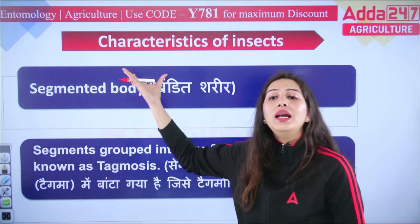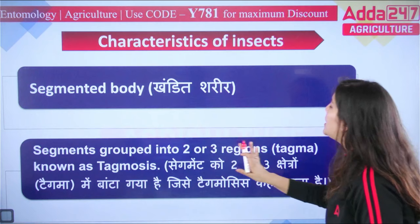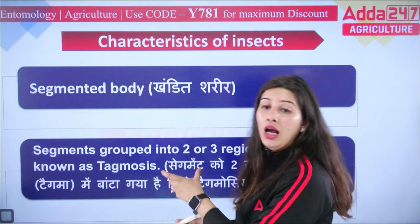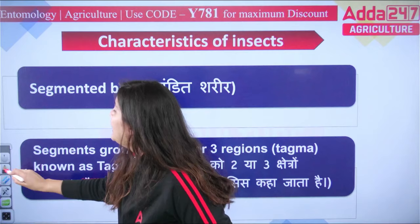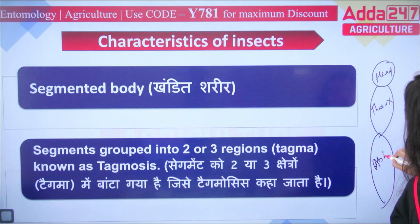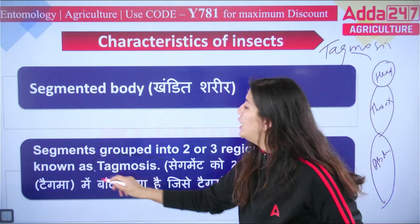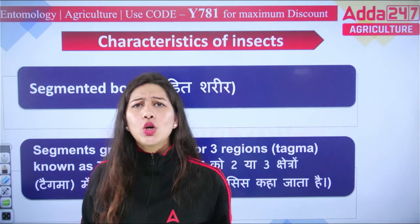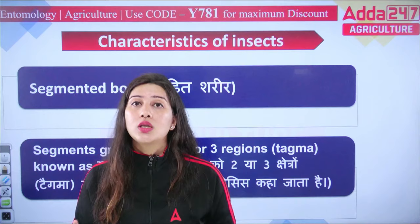Characteristics of insects: insects have a segmented body — a divided body. This body is divided into three regions: head, thorax, and abdomen. These regions are called 'tagma'. The process by which the insect body is divided into these three parts is called 'tagmosis'. So tagmosis is the process, and tagma are the individual segments. Two important exam questions arise from this.